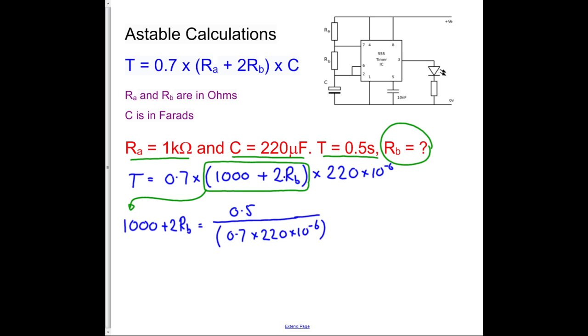So what I did there, if I look at the equation up above, I effectively took this part and this part together down underneath the T. So I ended up with T over 0.7C equals RA plus 2RB. And I'm not going to simplify it any further from there, I'm actually going to calculate it. So I'm going to start off by calculating the right-hand side of the equation.